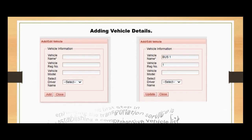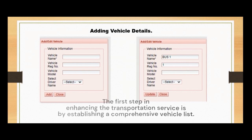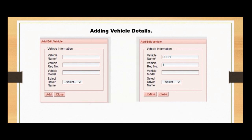The first step in enhancing the transportation service is by establishing a comprehensive vehicle list. By adding vehicle details such as bus names and other relevant information, we ensure smooth operations and enable a personalized experience. Once the details are entered, simply click on Add to witness the successful addition of vehicle information.